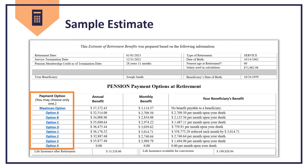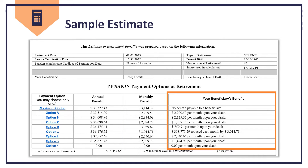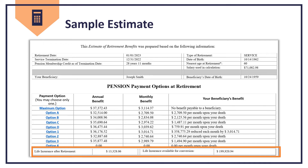The first column lists your estimated pension payment options. The next column provides your estimated gross annual retirement allowance. The center column is your estimated gross monthly allowance, and the last column lists your beneficiary's estimated benefit, if applicable. If you're eligible, a non-contributory life insurance benefit estimate will also be provided at the bottom, along with the life insurance available for conversion.